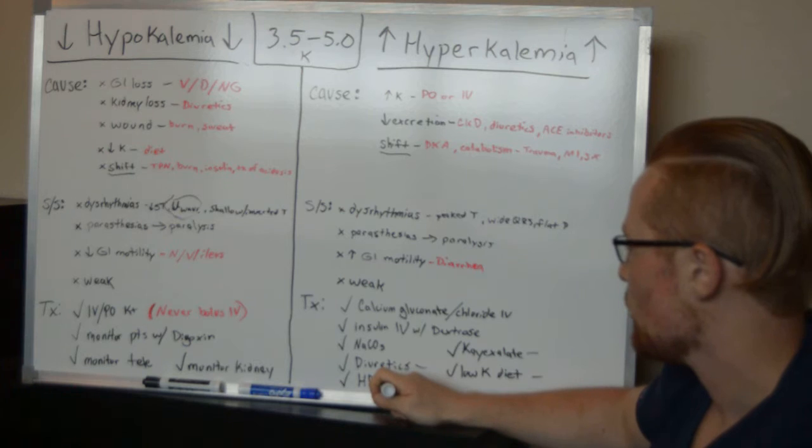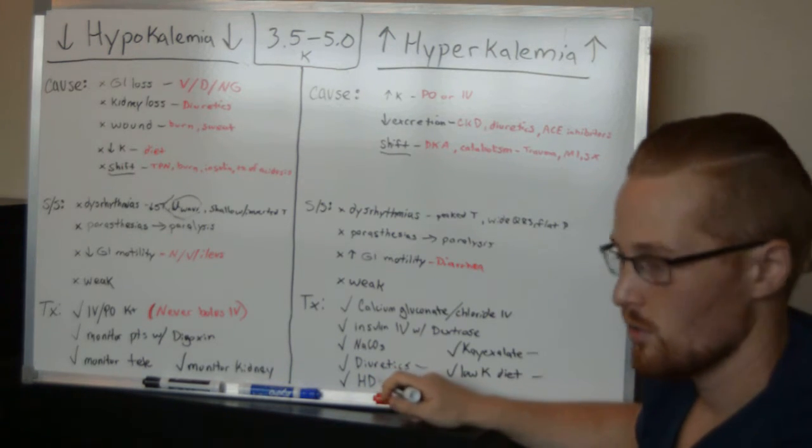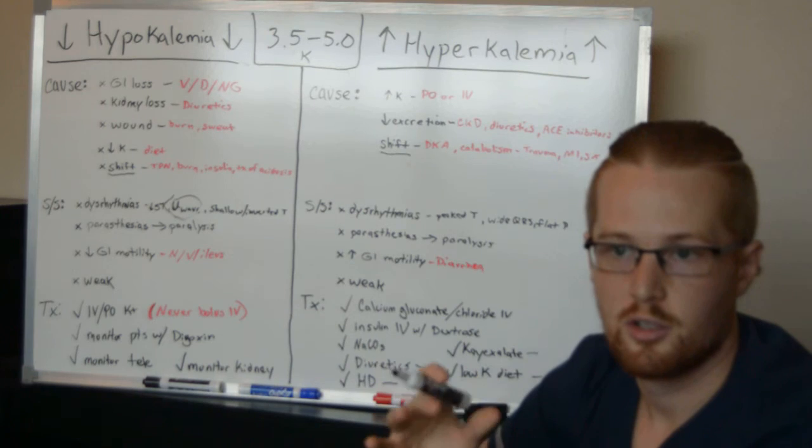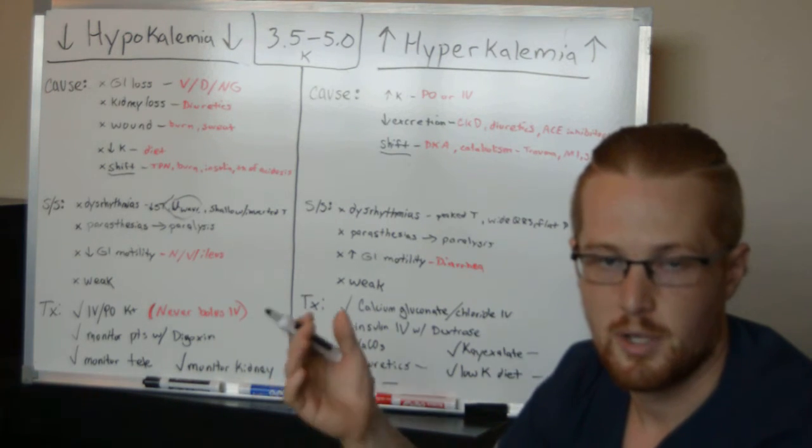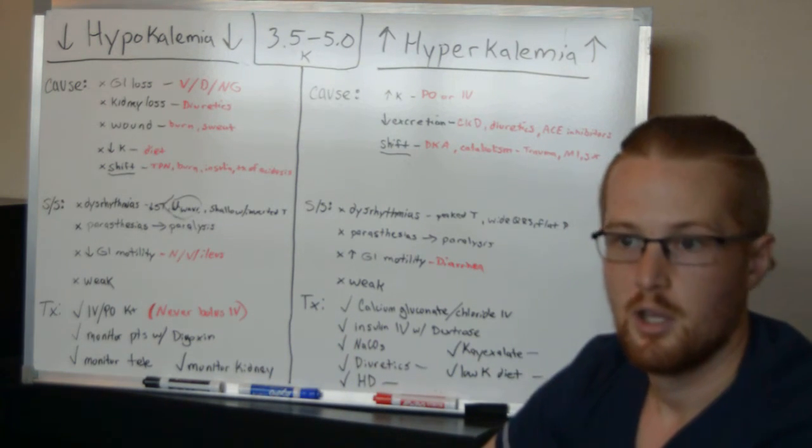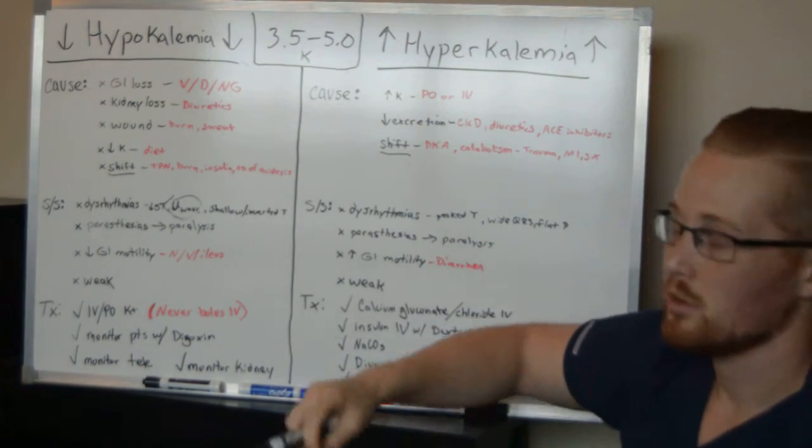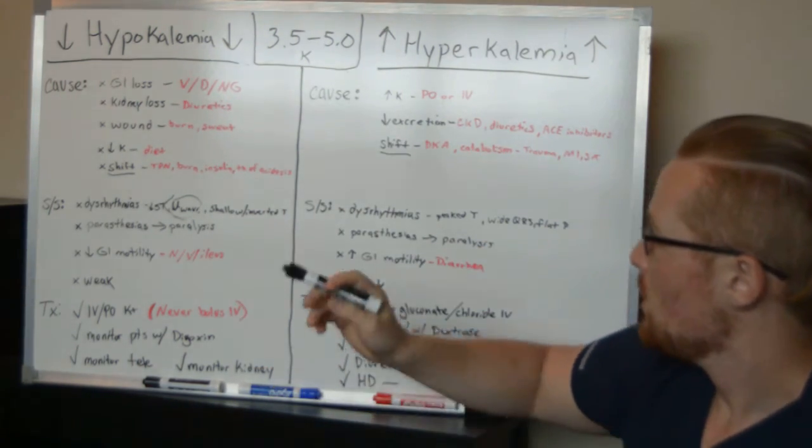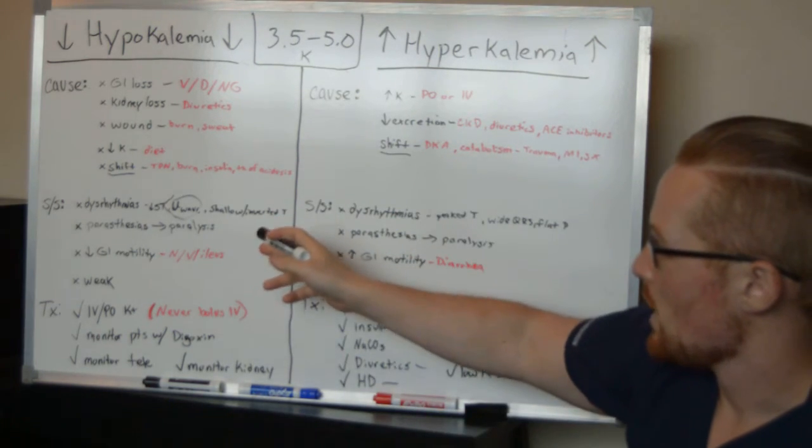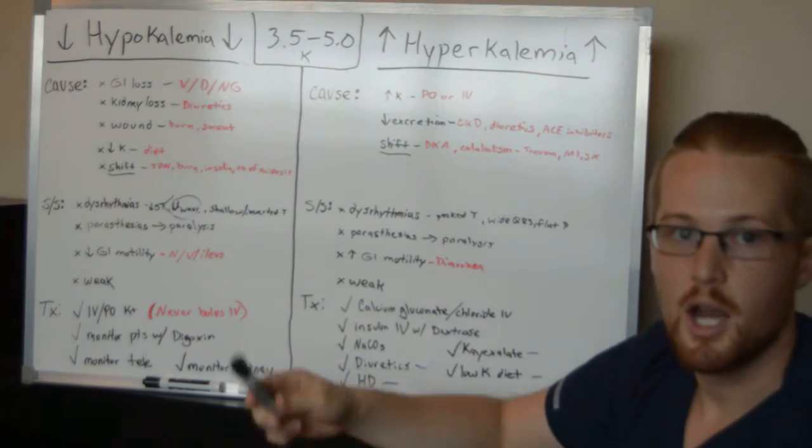And in extreme situations, and especially in end stage renal disease, you're going to do hemodialysis. And that's going to correct all the electrolyte issues, especially the potassium in the patient's body. So this video went a little over on time, but hypo and hyperkalemia are something you'll see very often. And I want to make sure you all have a good understanding. So this is hypo and hyperkalemia.